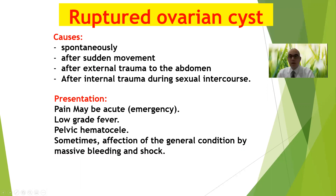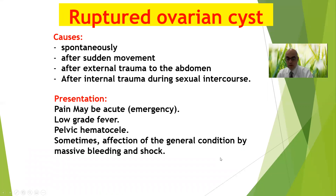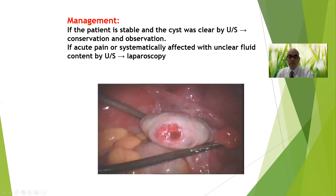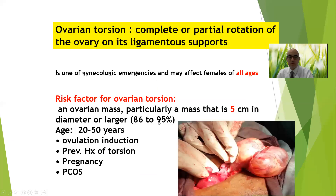Another cause of acute pelvic pain is ruptured ovarian cyst. It can occur spontaneously or after intercourse or trauma, presenting with pain, low-grade fever, pelvic hematocele, and sometimes hypovolemia due to massive bleeding. This is an example of ruptured ovarian cyst or ruptured follicle causing internal hemorrhage.